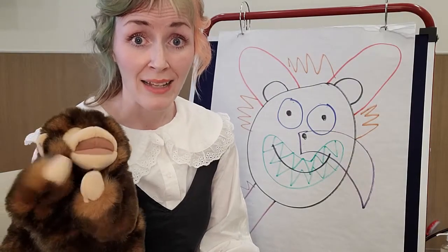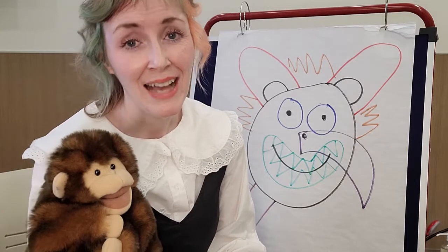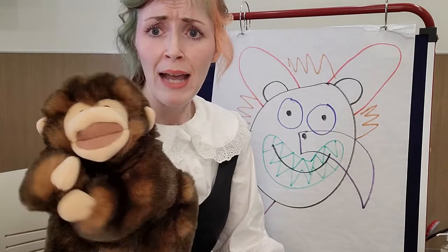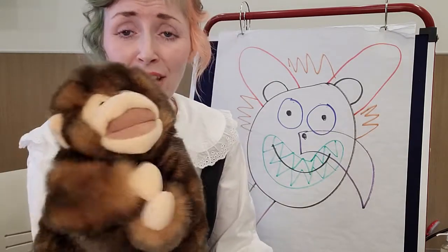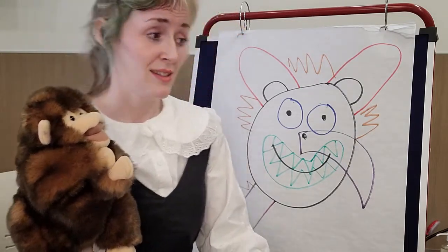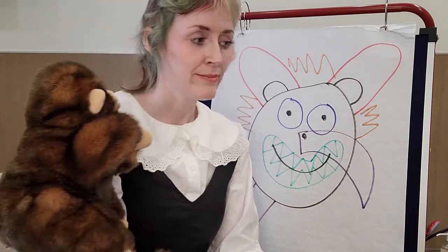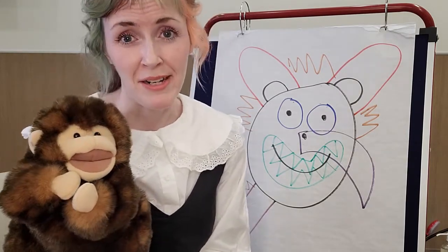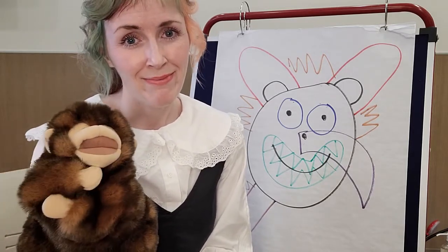Monkey ran the rest of the way home. When they got there, lunch was waiting and so was their mother. "Look what I made for you at school today," said Monkey. "It's a picture of you!" "I love it," said their mother. "Really? Just the way it is?" "Just the way it is," said their mom. And the two of them took that picture and hung it on the refrigerator for everyone to see. The end.